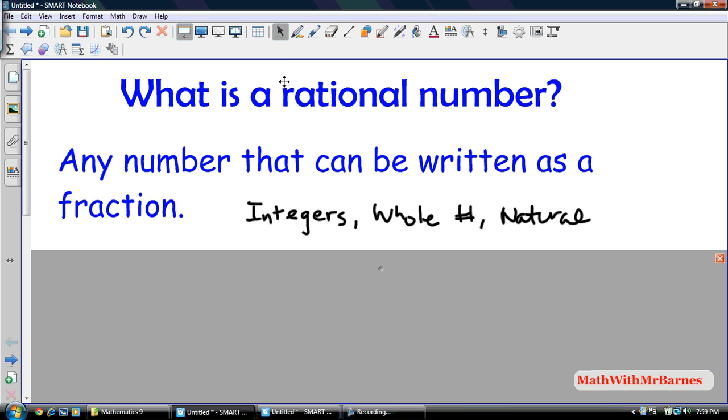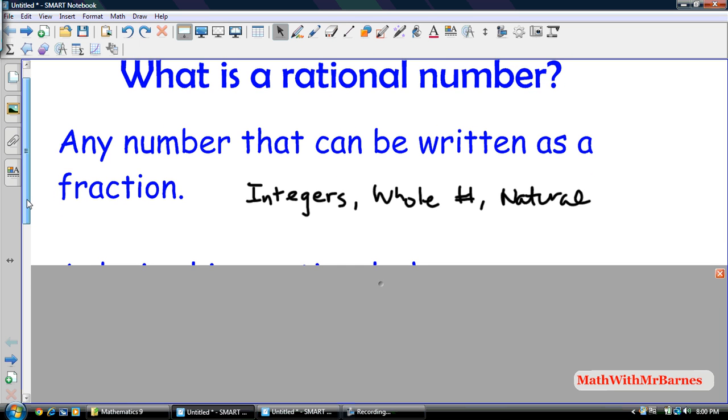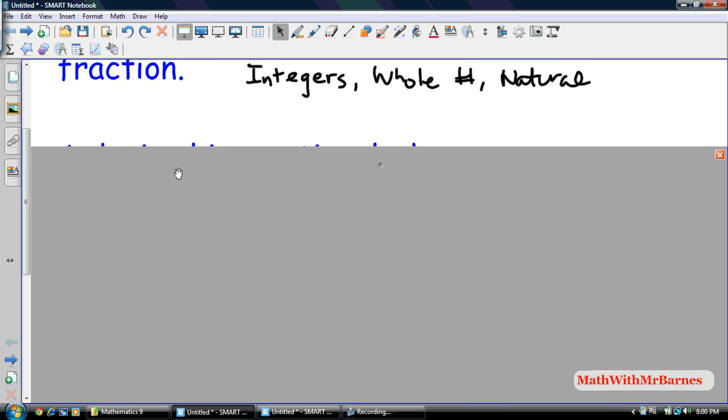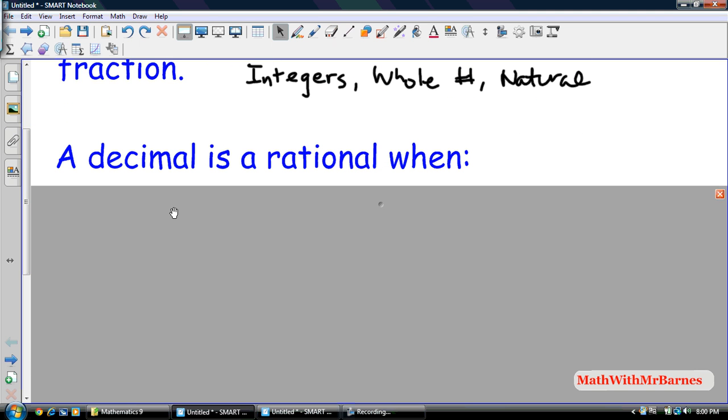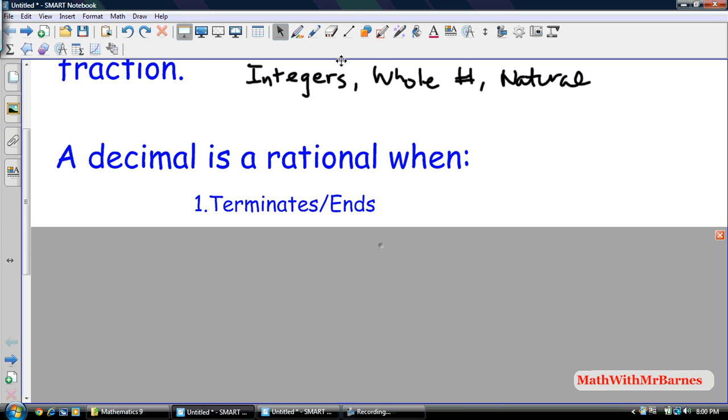Now, of course, fractions themselves, we already know are rational numbers. Like 1 half, 1 over 4, 3 over 4, 3 eighths, whatever. But you might be asking questions, well, how do I know if a decimal can be written as a fraction? Because not all decimals can be written as fractions. For example, the most famous example would be pi. But anyway, a decimal can be written as a fraction, or a decimal is rational when it either terminates or ends. So an example of that would be like 1.5, 0.125, 0.75. Anything that just ends, all of a sudden it stops. There's no numbers that follow. That's it. That's a rational number. We can write that as a fraction.